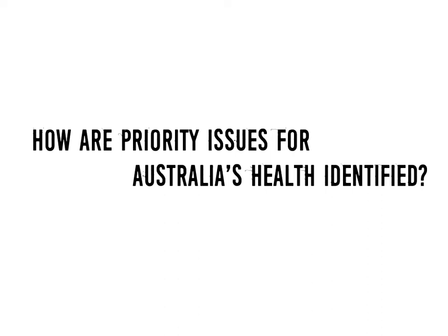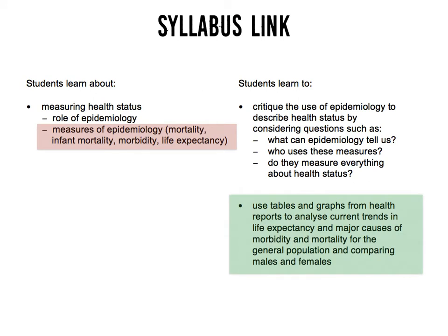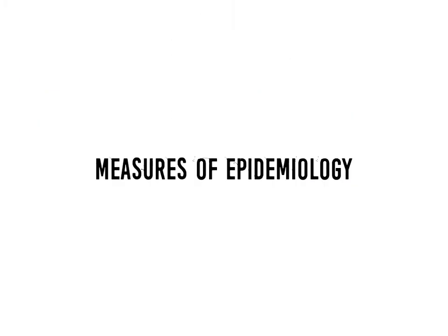This presentation will address the focus question: how are priority issues for Australia's health identified? It focuses on measuring health status, looking specifically at measures of epidemiology, particularly mortality. We'll be looking at some tables and graphs to examine current trends in mortality and compare males with females.